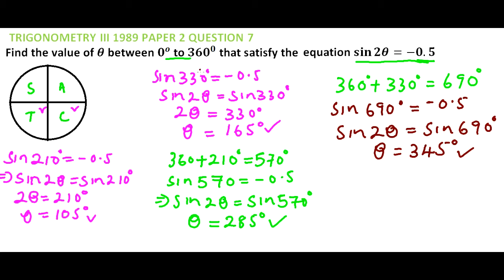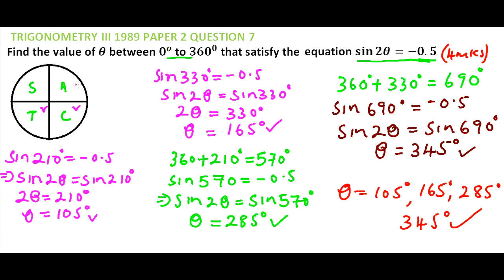If we work out the next angle, it will be beyond 360. Therefore, the values that satisfy theta are 105 degrees, 165 degrees, 285 degrees, and 345 degrees. This question was awarded four marks, with one mark for each angle found.